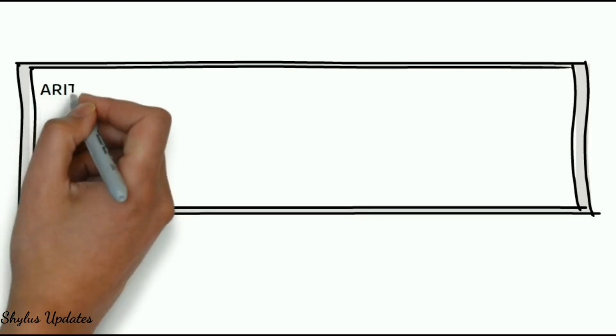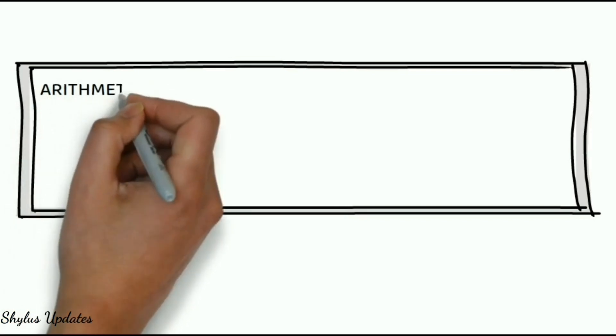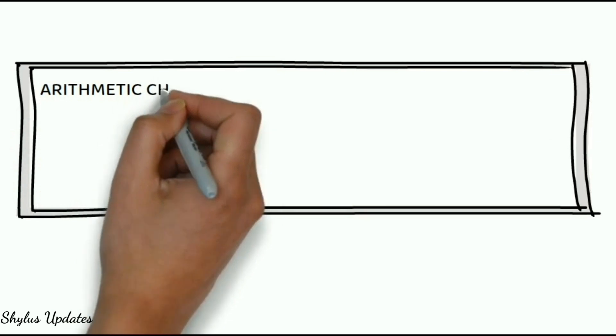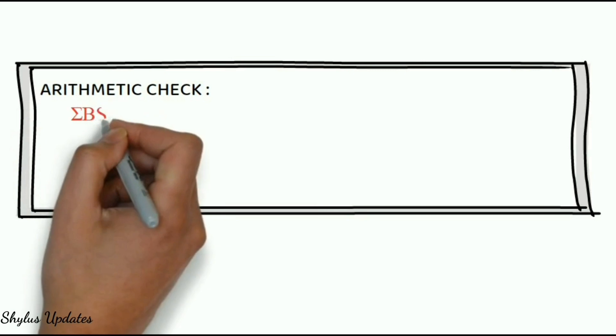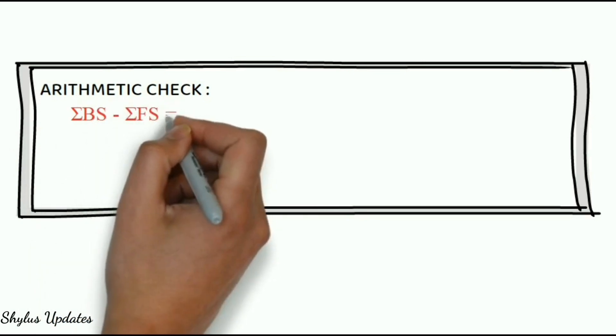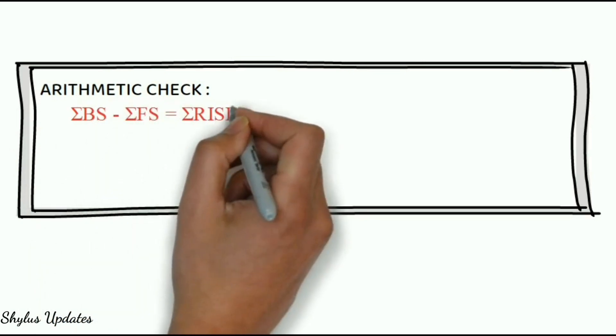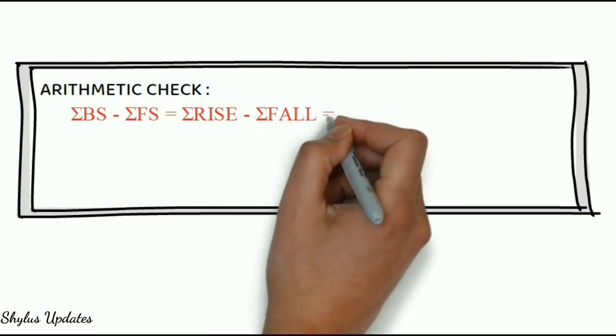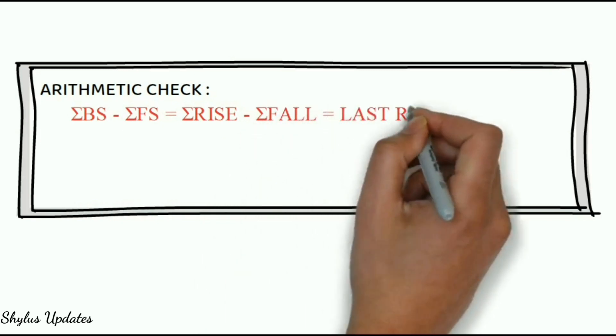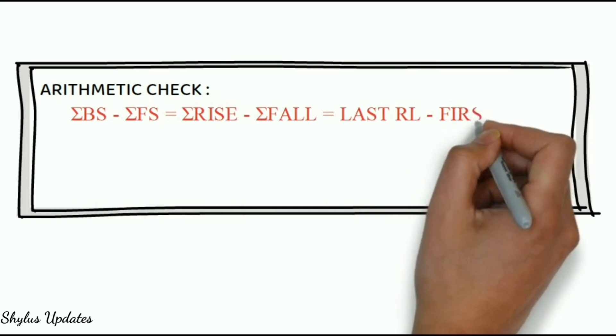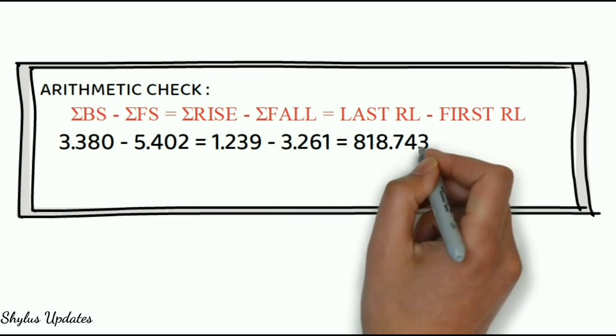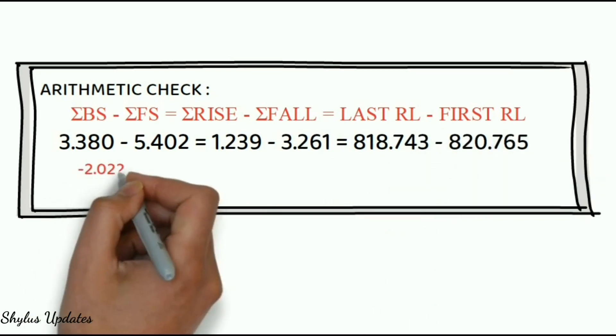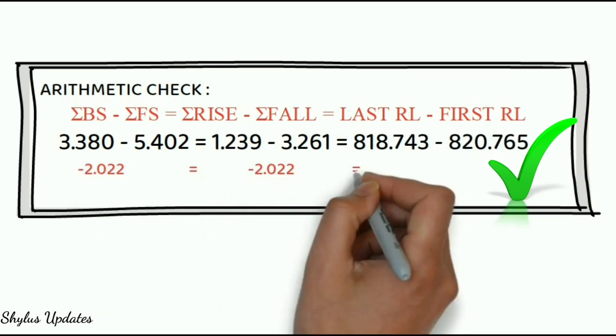The last step in this problem is arithmetic check. Arithmetic check for rise and fall method. There is a formula that is sigma BS minus sigma FS equal to sigma rise minus sigma fall equal to last reduced level minus first reduced level. When you do those calculations, you will get equal values. Hence, our calculations are absolutely right.